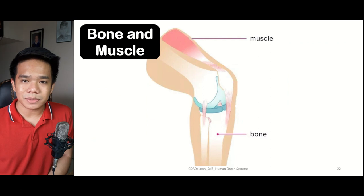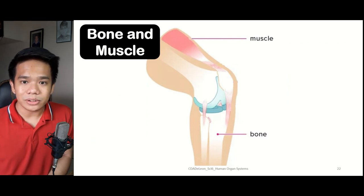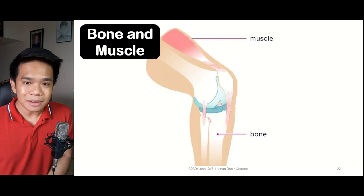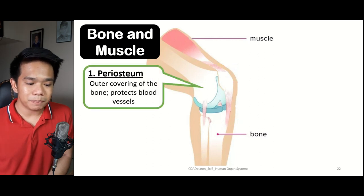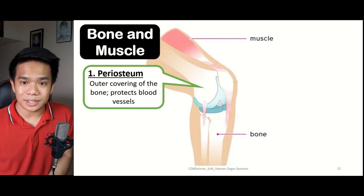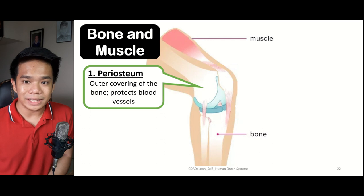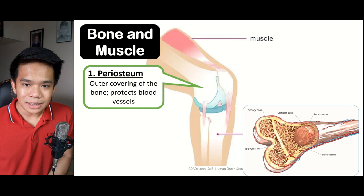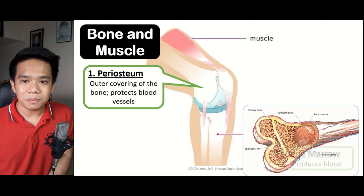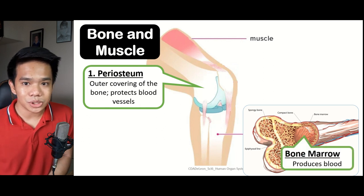Both the muscles and the bones are usually connected with one another, and they help for the movement of the body. The periosteum is the outermost covering of the bone — the hard white-like structure found outside the bone that protects the blood vessels inside. Inside the bone, there is the bone marrow, which helps for the production of blood.